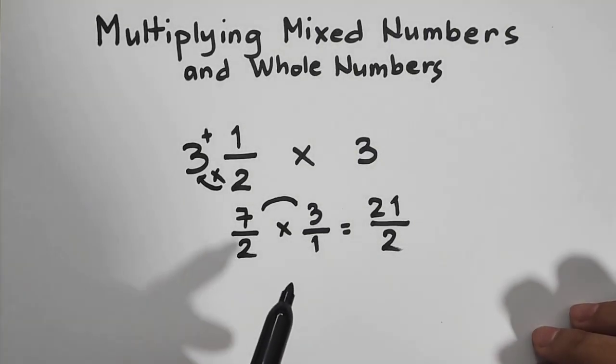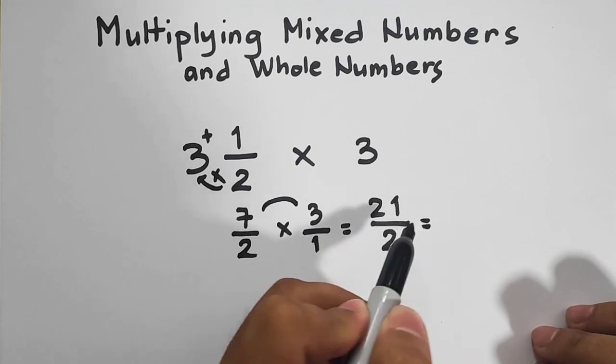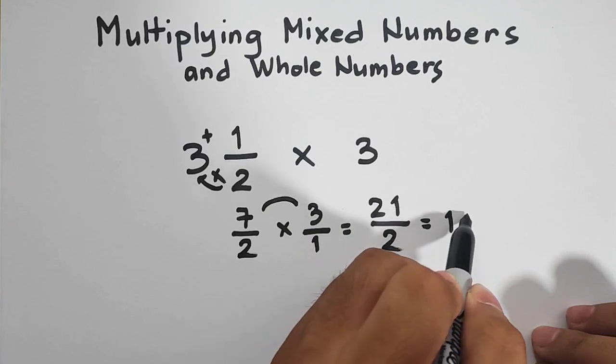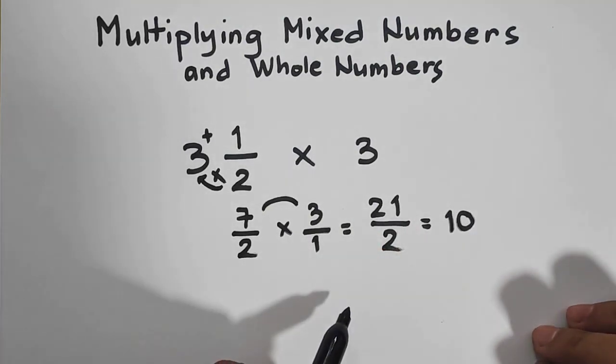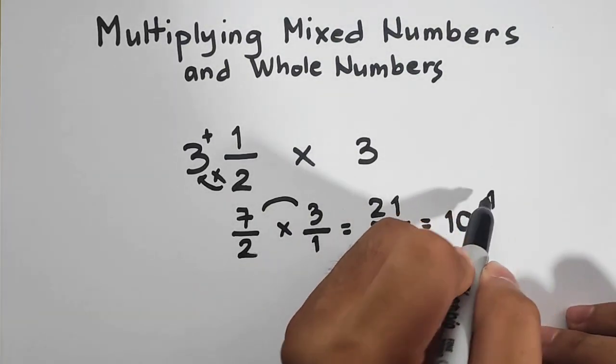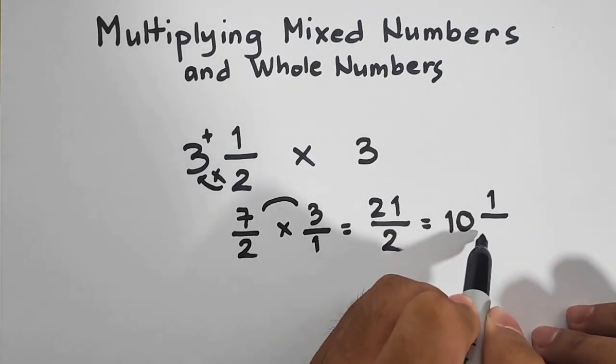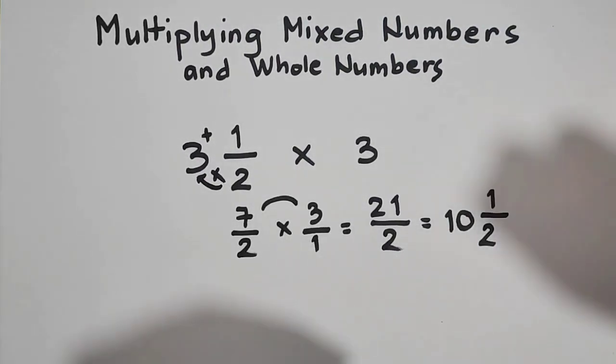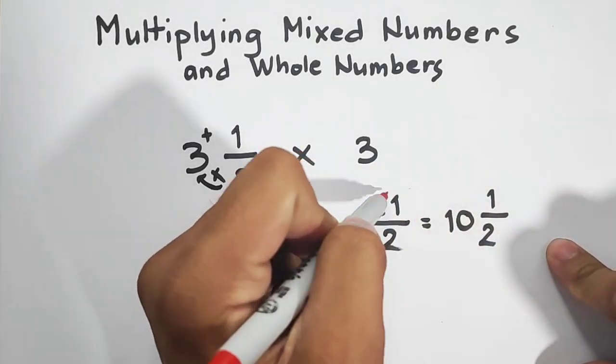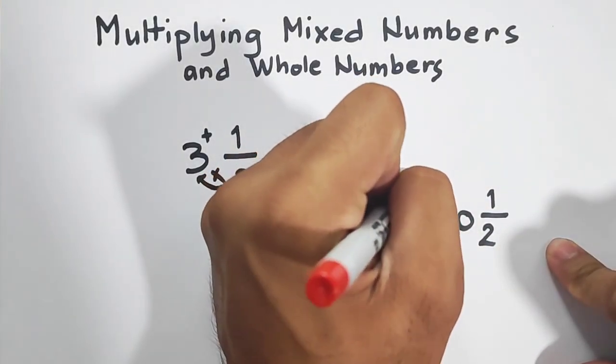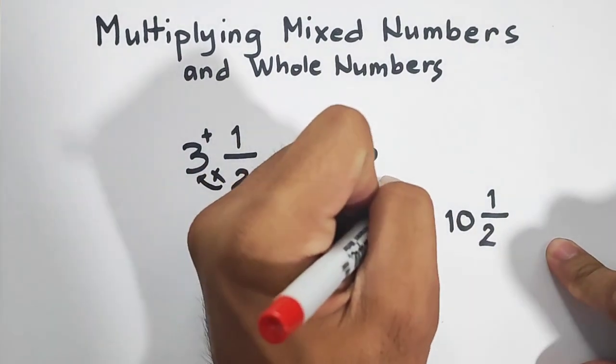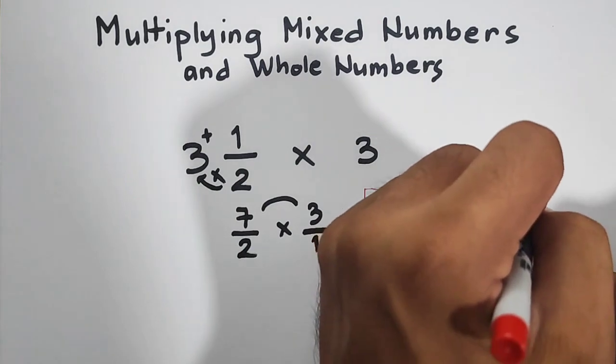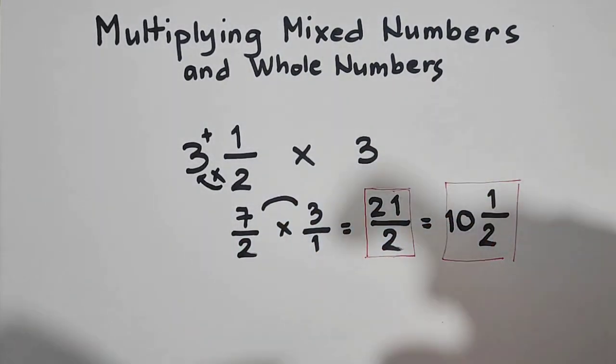So the equivalent mixed number of 21 over 2 is how many 2's do we have in 21? We have 10. And the remainder there is equal to 1. And then copy your denominator too. So either of the two, we can choose this answer. We can choose 21 over 2 or 10 and 1 half.